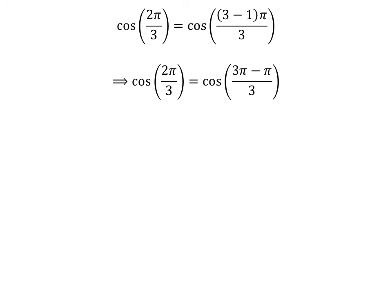Expanding the numerator, we get cosine of 2 times pi upon 3 is equal to cosine of 3 times pi minus pi upon 3.